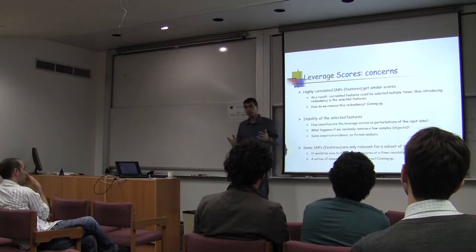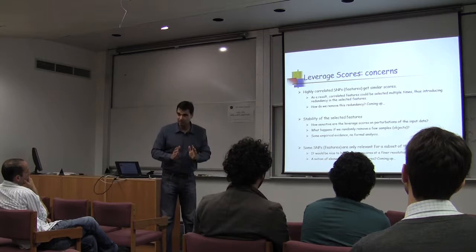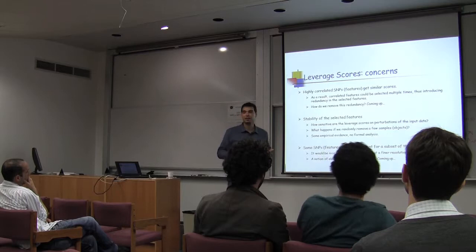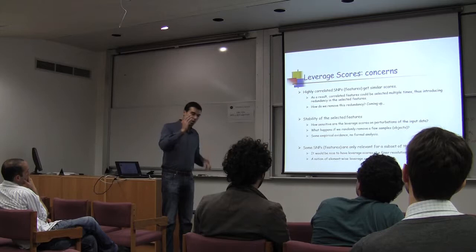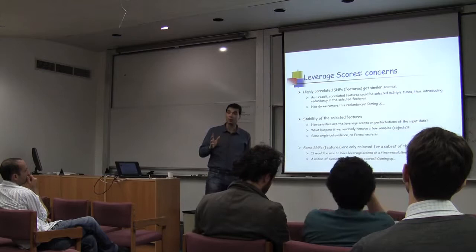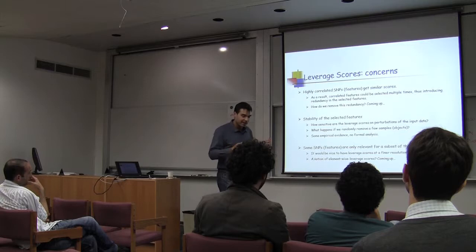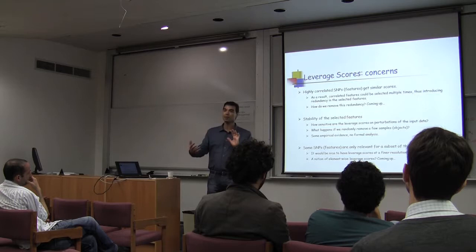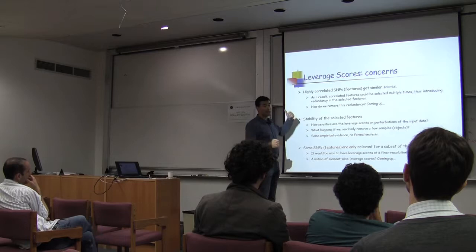There are some concerns with leverage scores. First, leverage scores are a univariate statistic. If two SNPs are identical, they get the same leverage score, but in feature selection you don't want to keep identical redundant features. You cannot avoid this by looking at the univariate statistic alone. The K log K term in the bound arises from coupon collector — it's fundamental to sampling-based approaches. Non-sampling-based techniques are needed if you want to eliminate correlated features.